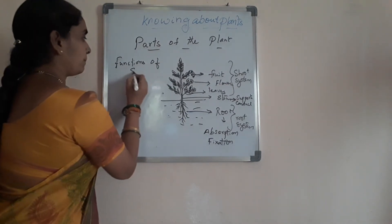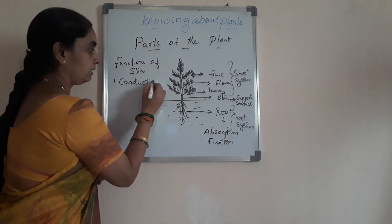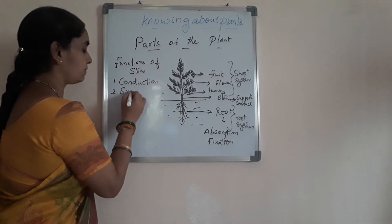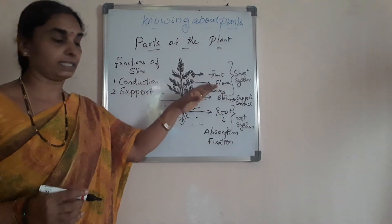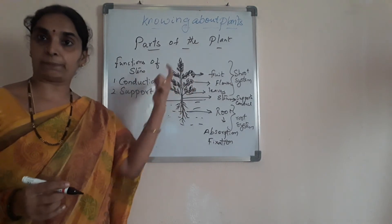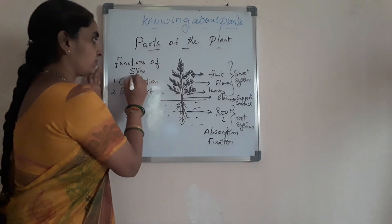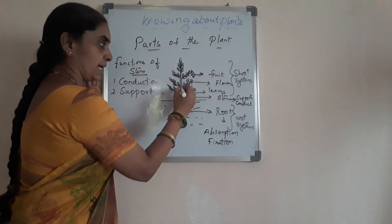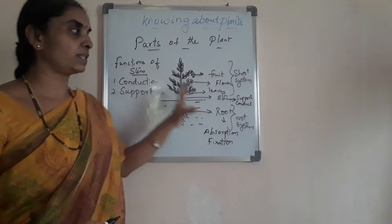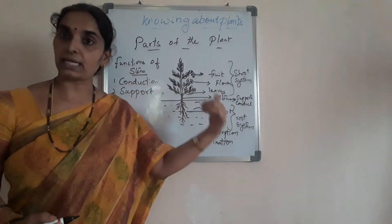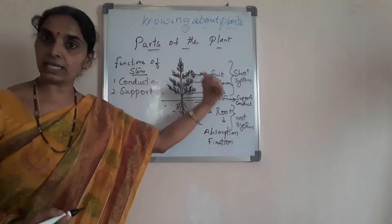The functions of the stem are conduction and support. It gives support to all the other parts of the plant, and the water absorbed by the roots is conducted through the stem to all the other parts of the plant. This is the main stem and these are the branches. The function of the stem is to give support to all the other parts of the plant and to conduct the water absorbed by the roots to all other parts.